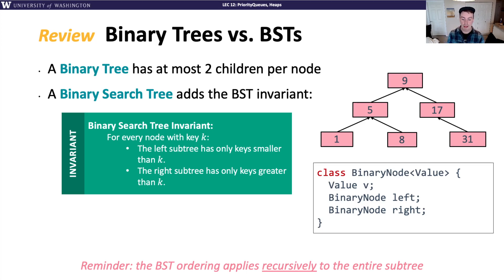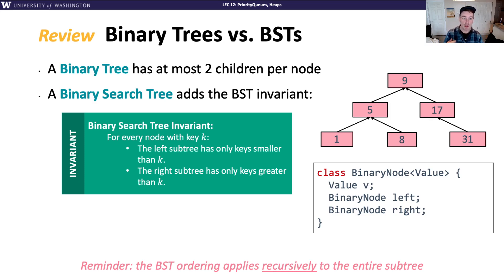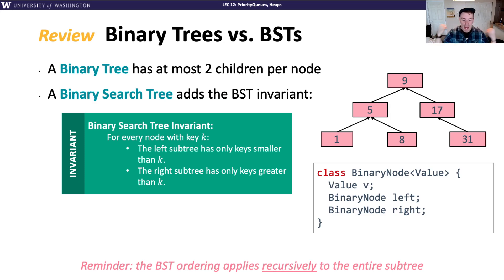Before introducing the new structure called a heap that will implement our ADT, let's do a quick review of tree terminology. A tree is a generic concept of nodes related to other nodes in a specific way. A binary tree is just any tree that has at most two children — there's no requirement on where data is located or how tall or balanced the tree is.